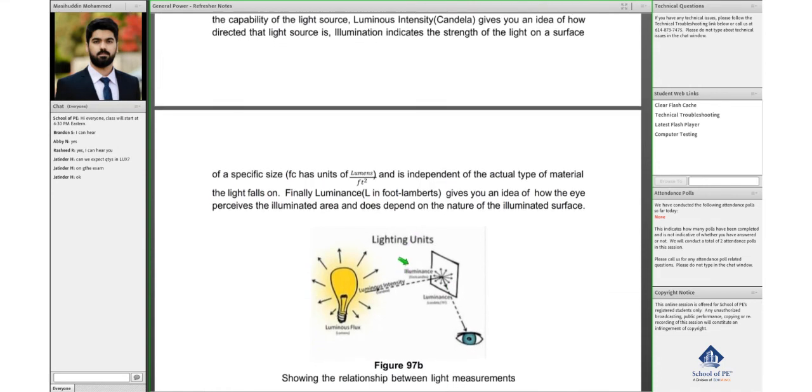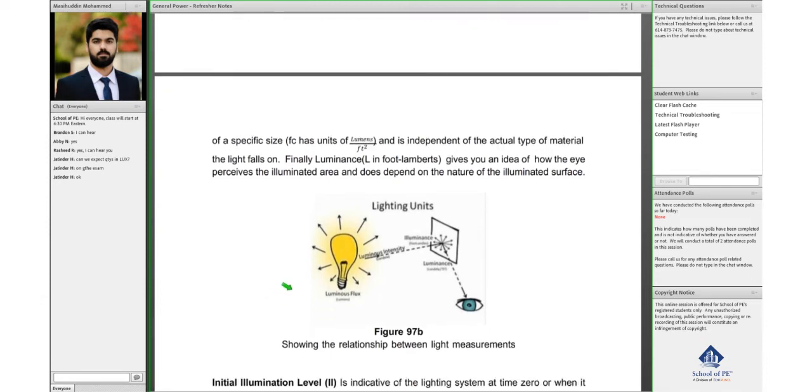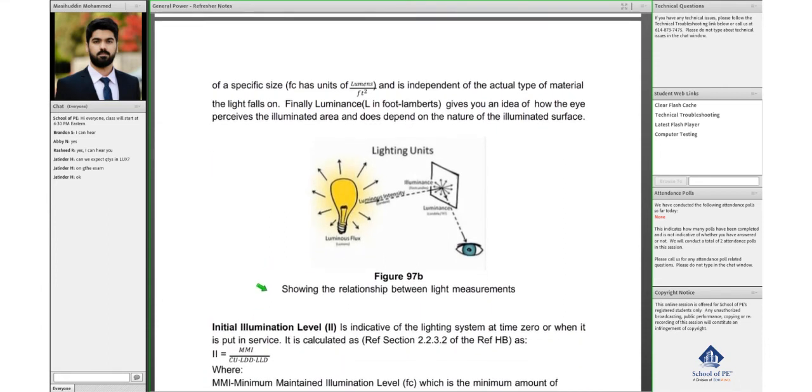Illuminance is basically the strength of light on this particular surface, how much is being reflected and how much is being cast on the surface. Different units have different formulas. When we do an example, we'll look into that.